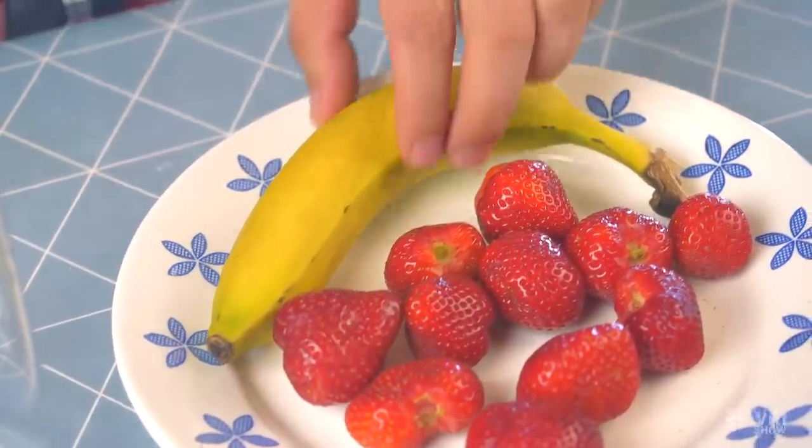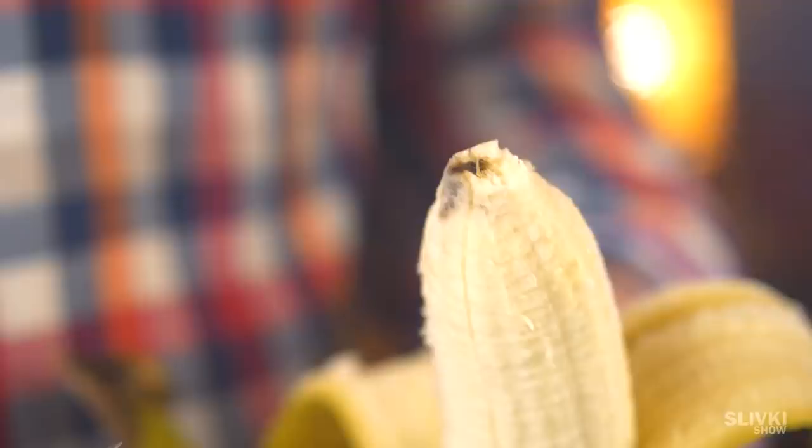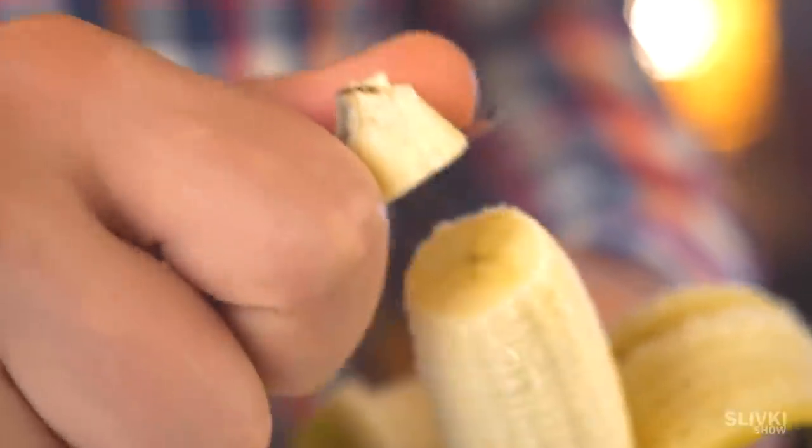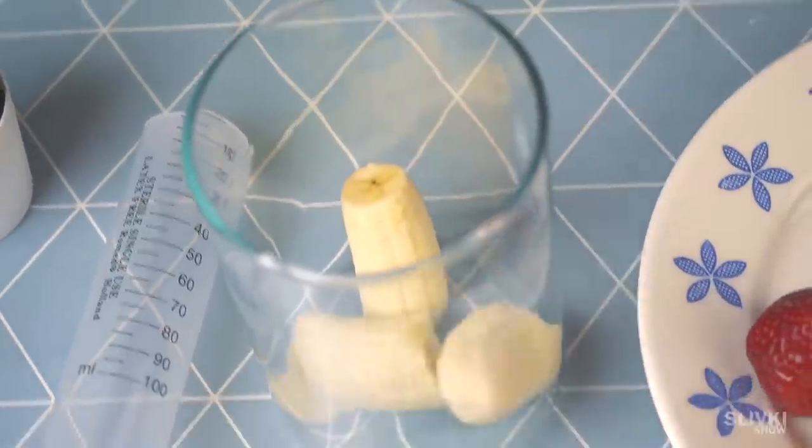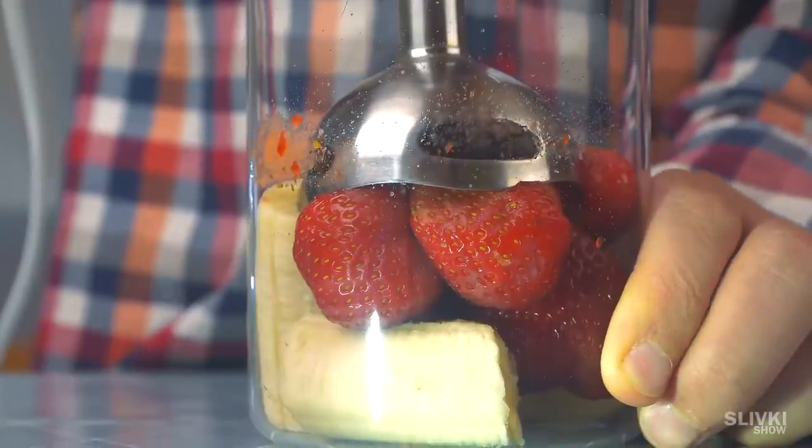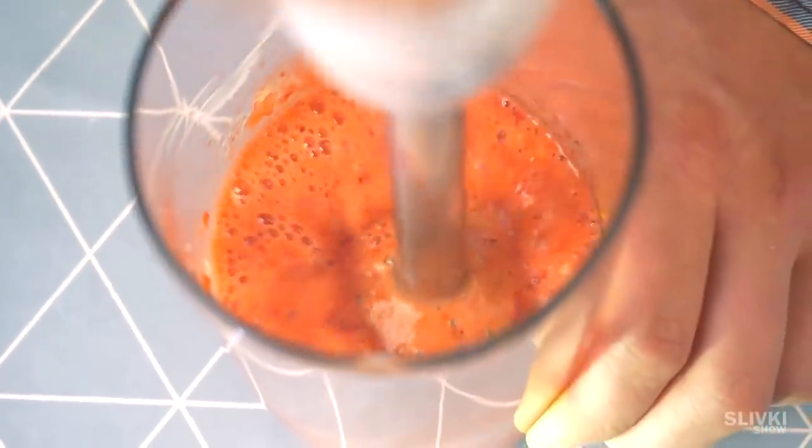From here we will need any fruit we can get. In our case it's banana and strawberry. This is the top thing I always take off, I just don't like it. We throw the banana and strawberry in a high container and use a blender to beat it all to a homogeneous mass.